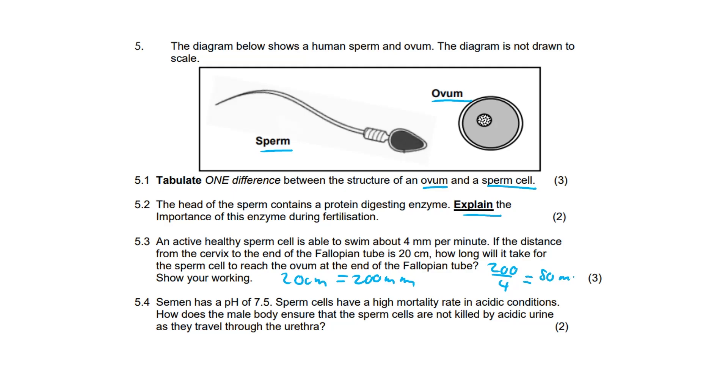How does the male body ensure that the sperm cells are not killed by acidic urine as they travel through the urethra? Answer here: The prostate gland secretes an alkaline substance that neutralizes the acidic environment of the urethra.